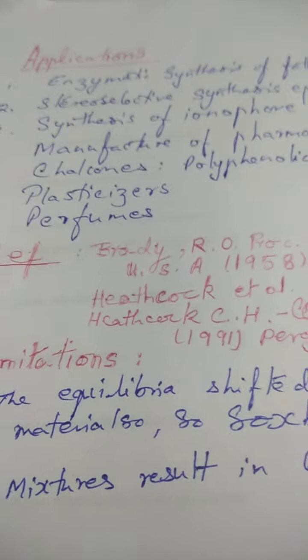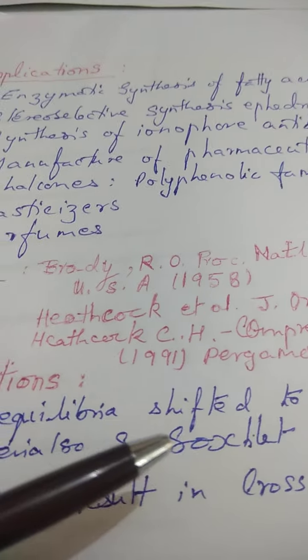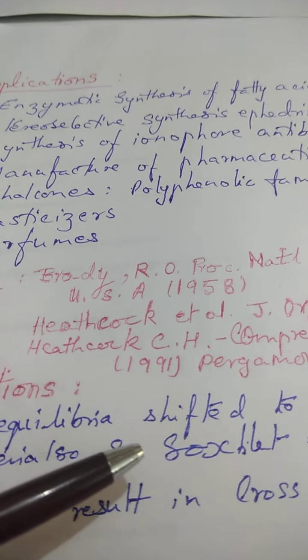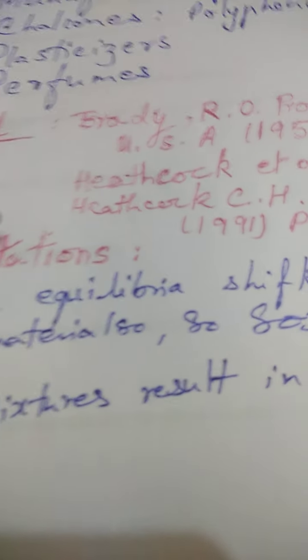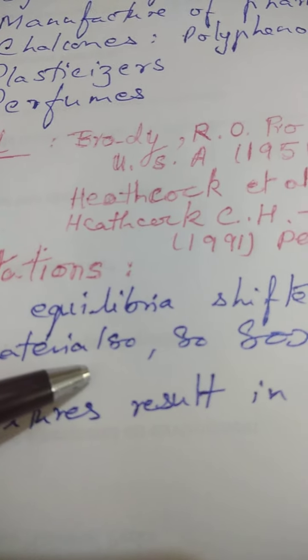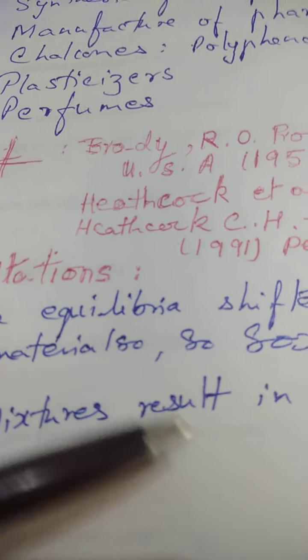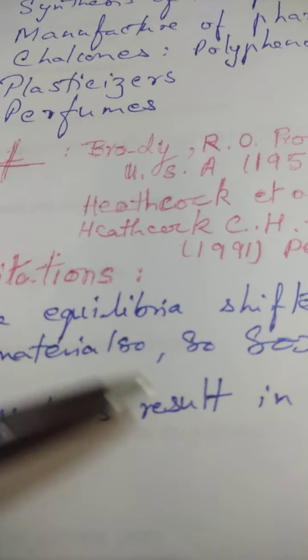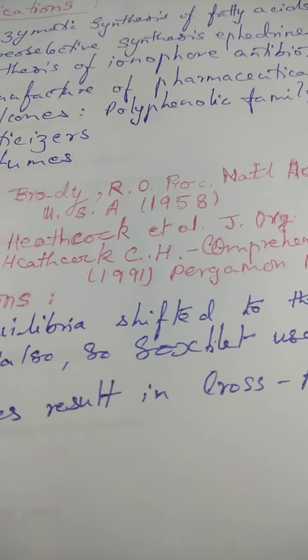The limitations of aldol condensation are: since this is a reaction that proceeds in equilibrium, the product must be continuously removed to drive product formation — sometimes managed using a Soxhlet apparatus. Additionally, in cross-aldol condensation where both different carbonyl compounds contain alpha hydrogens, a mixture of products can result, which has no synthetic utility.